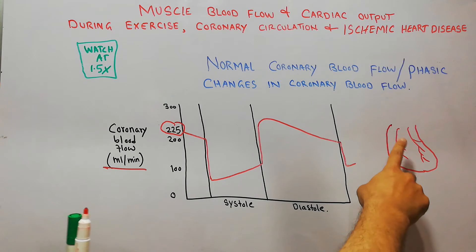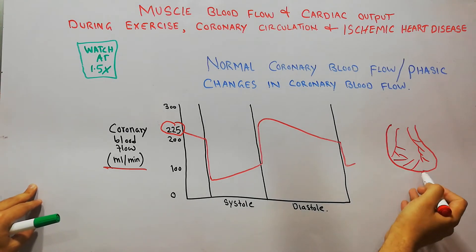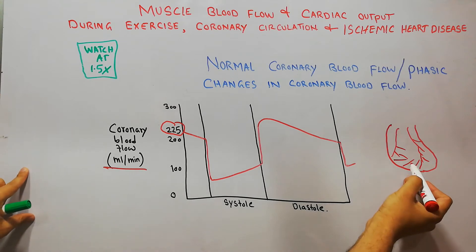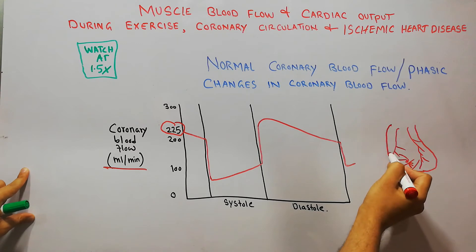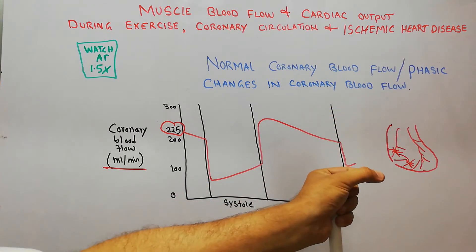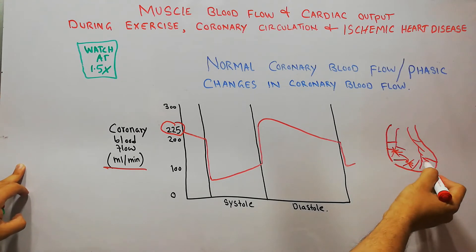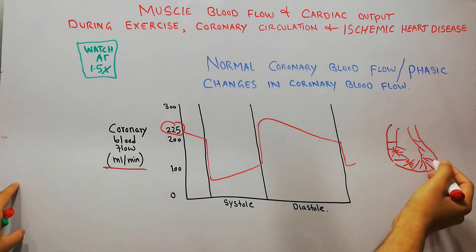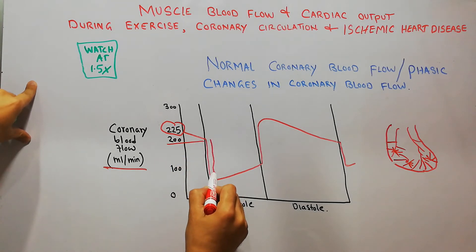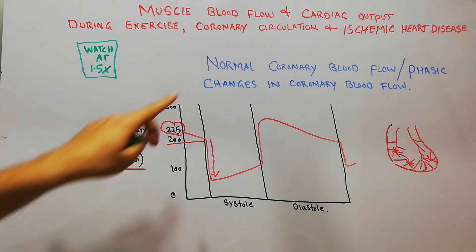This is because the blood vessels supplying blood to the heart are penetrating deep inside the muscles. When the heart contracts, these blood vessels get compressed due to pressure from outside. The main right and left coronary arteries on the surface may not be fully compressed, but the small branches penetrating deep inside the musculature of the heart get compressed due to pressure of the heart muscles.